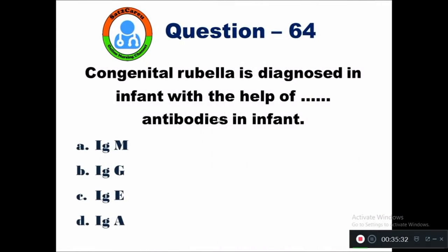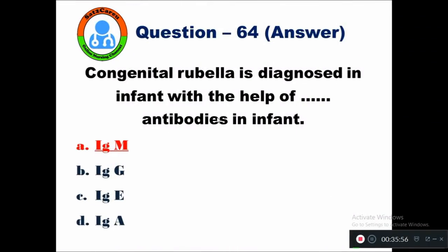Question 64: Congenital rubella is diagnosed in an infant with the help of antibodies — option A immunoglobulin M, B immunoglobulin G, C IgE, D IgA. Congenital rubella is diagnosed in an infant with the help of the presence of IgM antibodies.